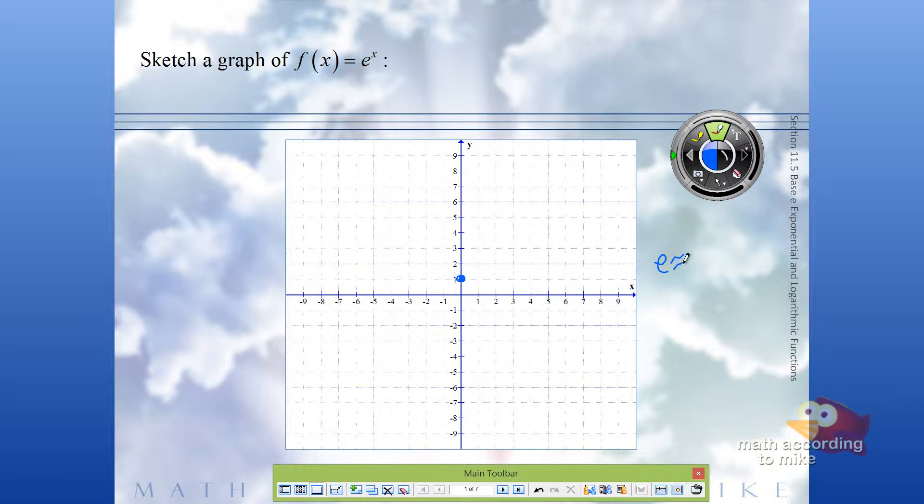Well, remember, e is approximately 2.71828. So here's 1, here's approximately 2.71828.